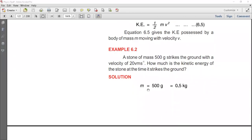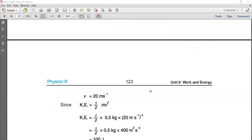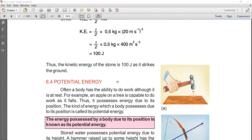Example: A stone of mass 500 grams strikes the ground with velocity of 20 m/s. How much is the kinetic energy of the stone at the time it strikes the ground? Use the work done formula to solve this numerical example.